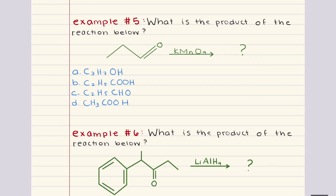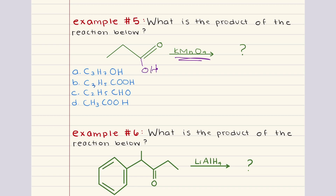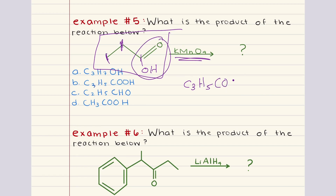Problem five asks what is the product of the reaction below. In this reaction, an aldehyde is being treated with potassium permanganate. Aldehydes are readily oxidized to their corresponding carboxylic acids when exposed to strong oxidizers like potassium permanganate. The oxidation process replaces the hydrogen atom attached to the carbonyl group with a hydroxyl group, forming a carboxylic acid. We still have three carbons, the structure stays the same, there are five hydrogens, and we have our carboxylic acid functional group, COOH. This matches answer choice B.